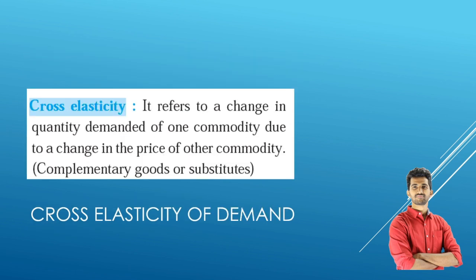Cross Elasticity of Demand is regarding complementary goods or substitute goods — goods which are complementing each other or are relatively substitute to each other. It refers to a change in quantity demanded of one commodity due to a change in the price of another commodity. If the price of a certain commodity changes, it might lead to a change in demand for the other product, leading to cross elasticity of demand.